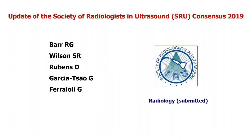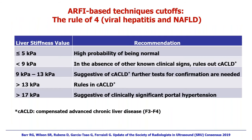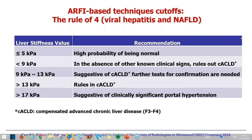The Society of Radiologists in Ultrasound has updated its consensus, to be published soon. For shear-wave elastography, considering all published studies, a rule of four is proposed for patients with viral hepatitis and non-alcoholic fatty liver disease: below 5 kPa — high probability of being normal; below 9 kPa — rule out compensated advanced chronic liver disease; 13 kPa — rule in compensated advanced chronic liver disease; above 17 kPa — suggestive of clinically significant portal hypertension.